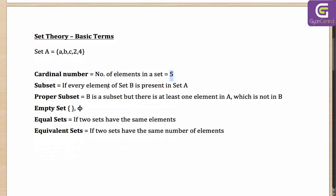A subset: if every element of set B is present in set A, then B is a subset of A. How many subsets are possible? If a set has n elements, the number of subsets is 2 to the power of n. For each element there are two choices — whether it will be there or not. So 2 for a, times 2 for b, times 2 for c, and so on — giving 2 to the power of n, which in this case is 32.